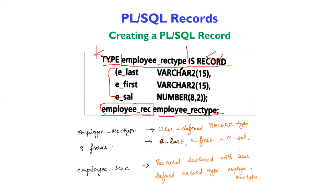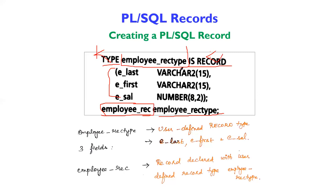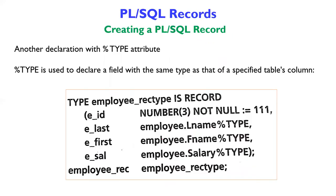To access the fields within a record, you use the dot operator. The syntax is record_name.field_name. For example, employee_record.e_salary. This is how you access individual fields in a record. You can also use percentage type when declaring a field to anchor it to the same data type as a specified table column — this is also available in PL/SQL records.